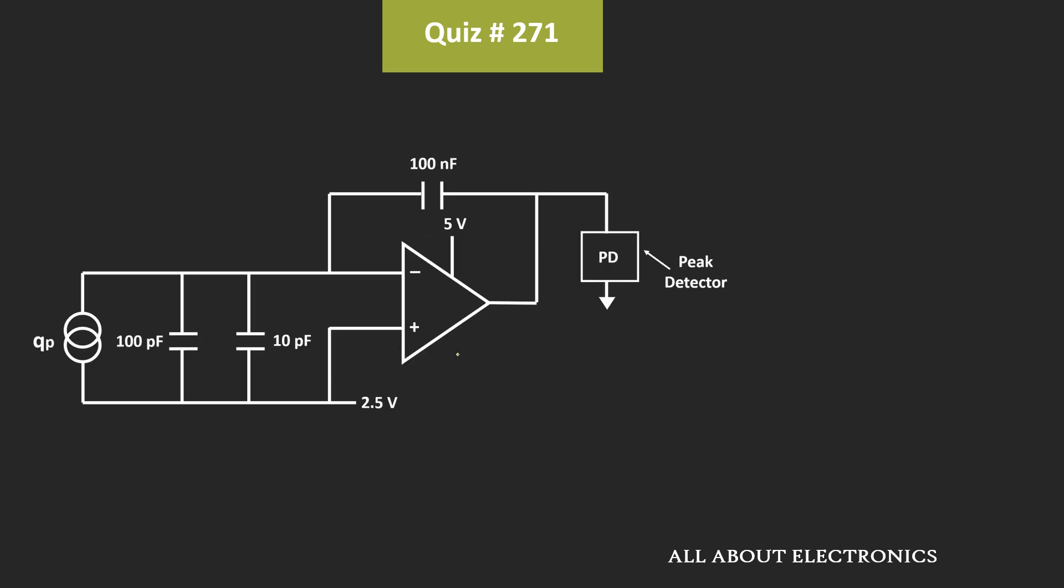If you see this circuit, then due to the negative feedback, here we can apply the concept of the virtual short. That means the voltage V+ will be equal to V-. And here if you see, the V+ is equal to 2.5V. That means voltage at the V- will be also equal to 2.5V. That means at this node, the voltage will be equal to 2.5V.